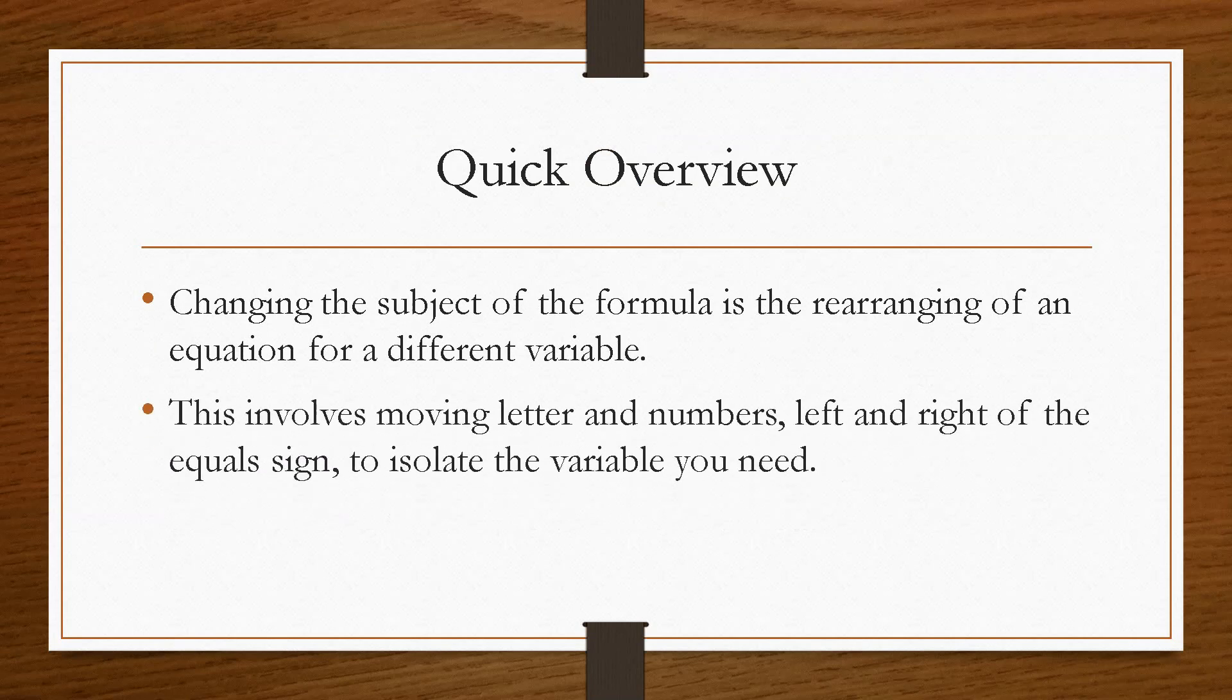It involves the moving of letters and numbers from left and right of the equal sign to isolate the variable that you need, i.e., just get everything on one side and isolate the variable that you want.